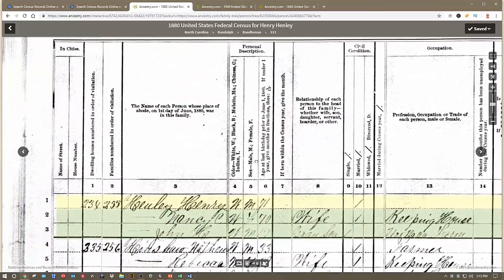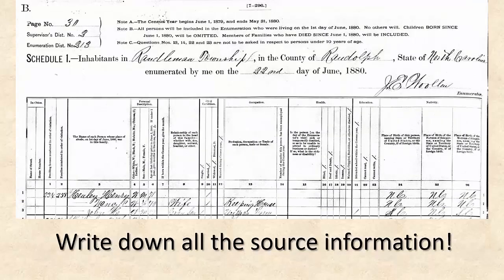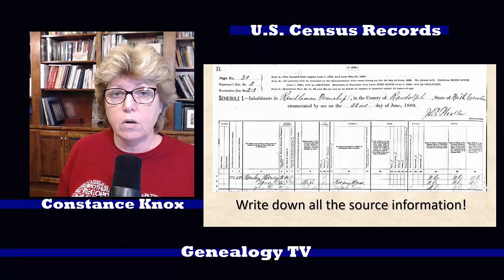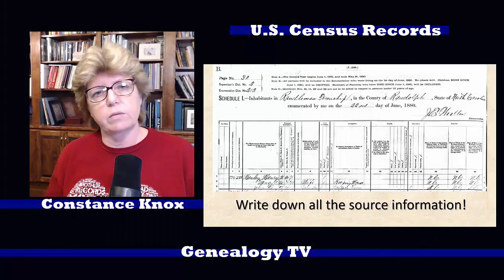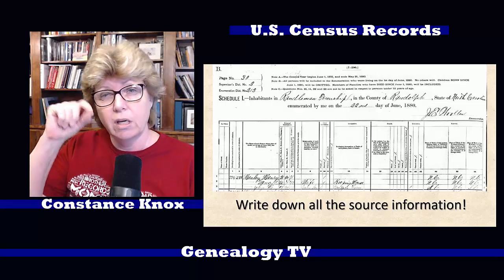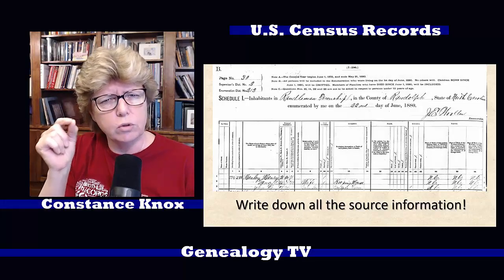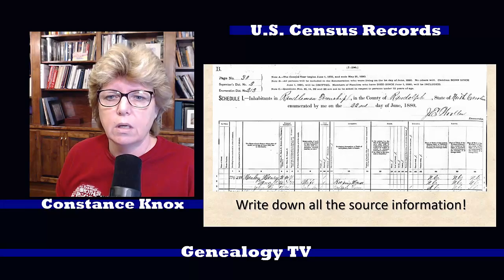The 1880 census is a phenomenal census. Unfortunately, the sad news is that the 1890 census was almost completely destroyed, so then we have to skip over to the 1900 census. The point being is that we need to write down all of our source information. Sources are critically important because if you don't write down your source information, ten years from now when you're trying to go back and find that information again — or you want to look at it a little closer — you're going to need to know where you found it.